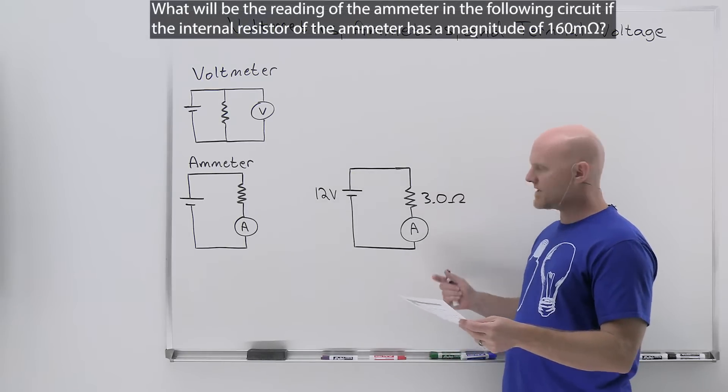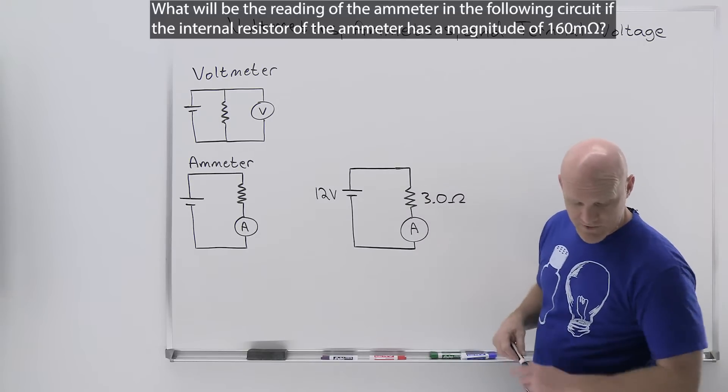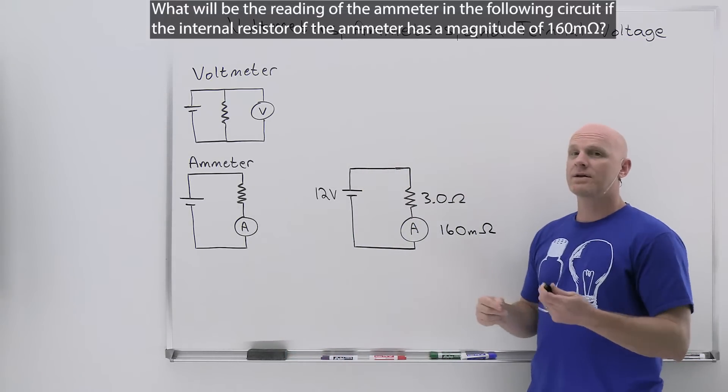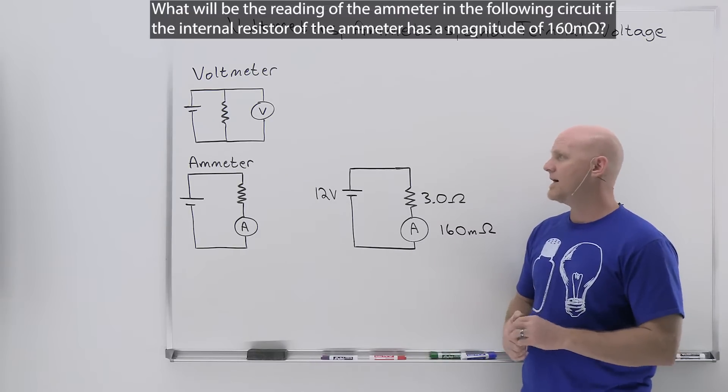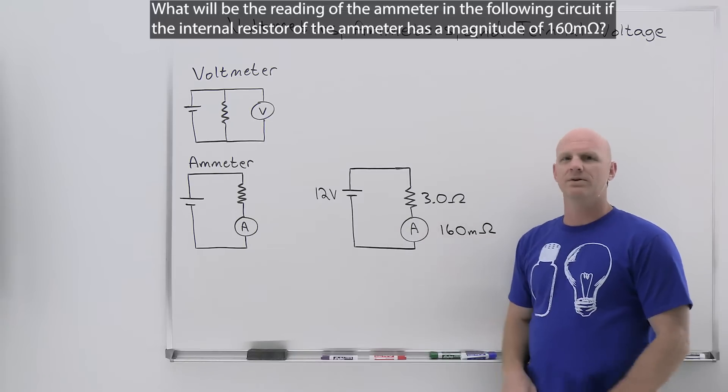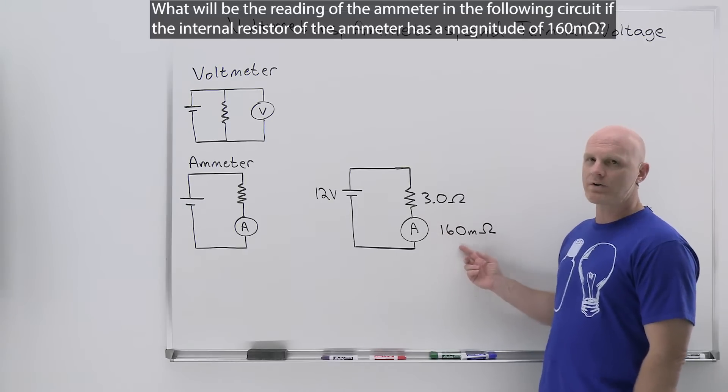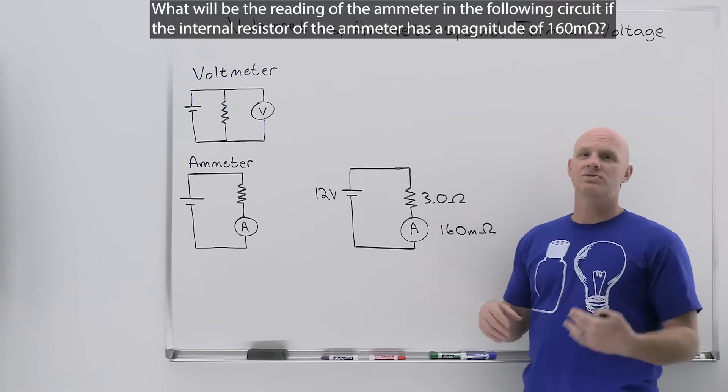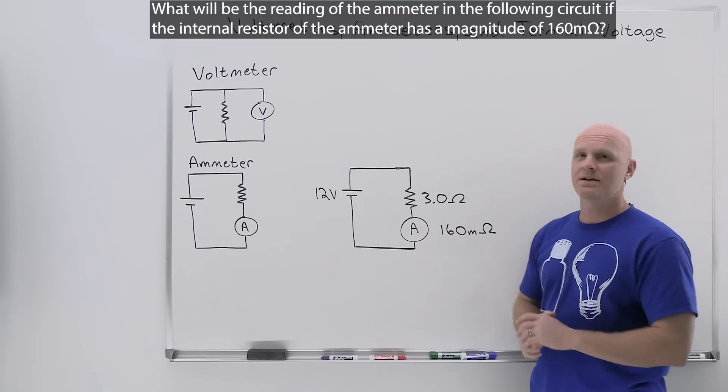We're actually going to see how much the ammeter actually affects the measured current reading. The question says: what will be the reading of the ammeter in the following circuit, if the internal resistance of the ammeter has a magnitude of 160 milliohms? Now in practice, lots of ammeters or multimeters, depending on who you talk to, which have the function of an ammeter built into them, often have variable resistances by the turn of a dial. This might be one of them, but the truth is we probably would want a smaller value because we're going to see that this is probably going to have a little bit more of an impact than we want it to. But I picked the number here because I wanted it to actually have a measurable impact.